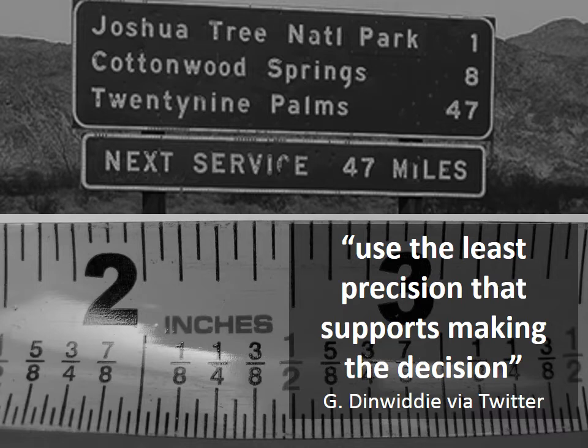We have to use the precision which supports decisions quickest. For instance, we don't use inches to measure distance between towns — we use miles. In this case, it's 47 miles to the next gas or petrol station. We can work out whether we have enough in our current tank to make the next service stop — it's good enough to know that we're in miles.